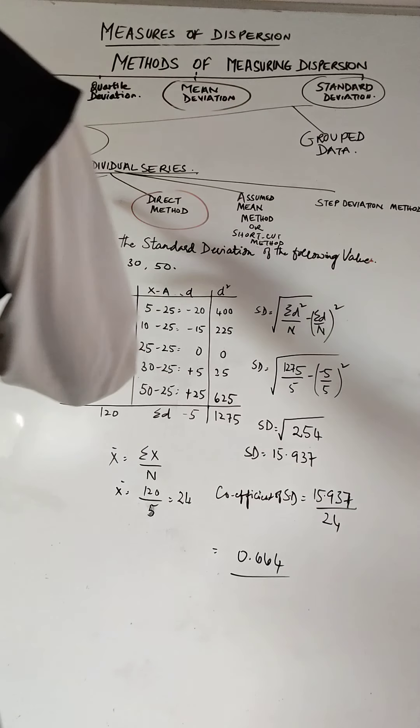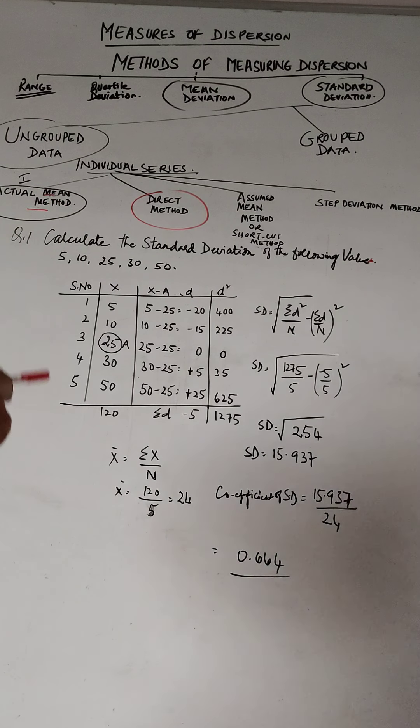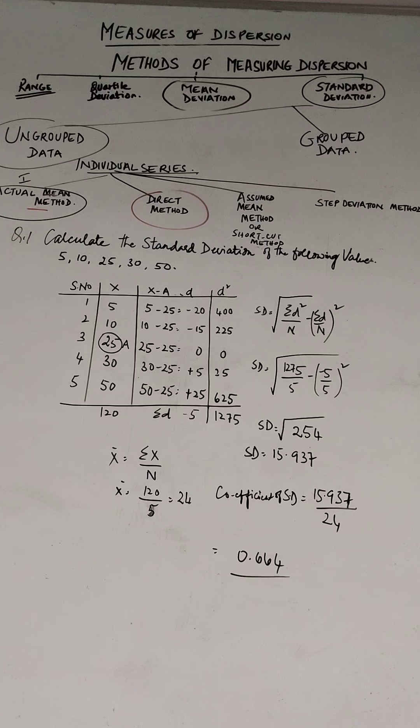In this we take any value arbitrarily, and especially we go into this for a reason. Sometimes it happens that when you work out the actual mean, it comes in fractions, then it becomes very difficult and tedious.